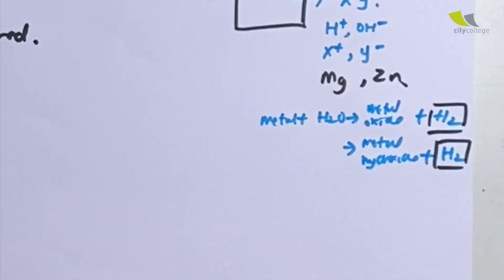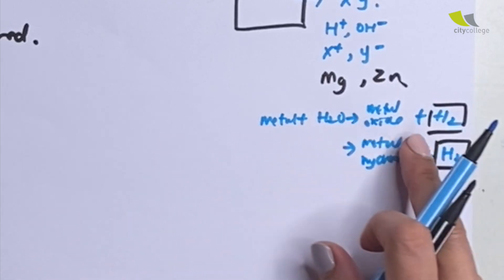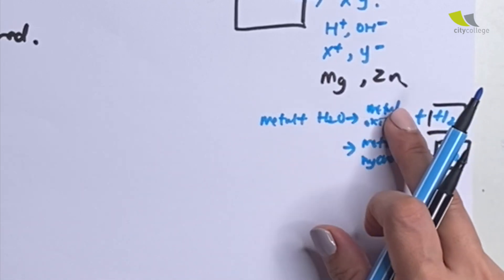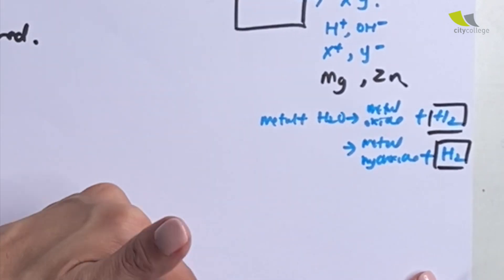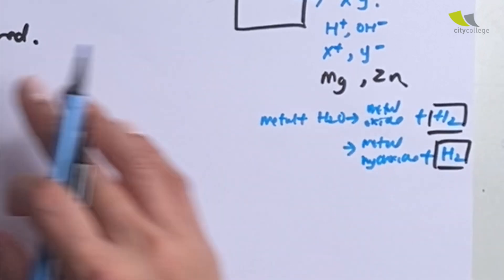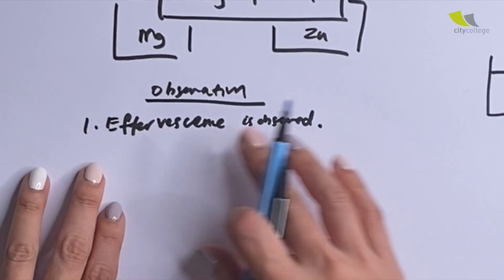But of course, over here, whether it will form a metal oxide or metal hydroxide, it will depend solely on the position of it in the entire reactivity series of metals. So let's come back to here. When effervescence is observed,